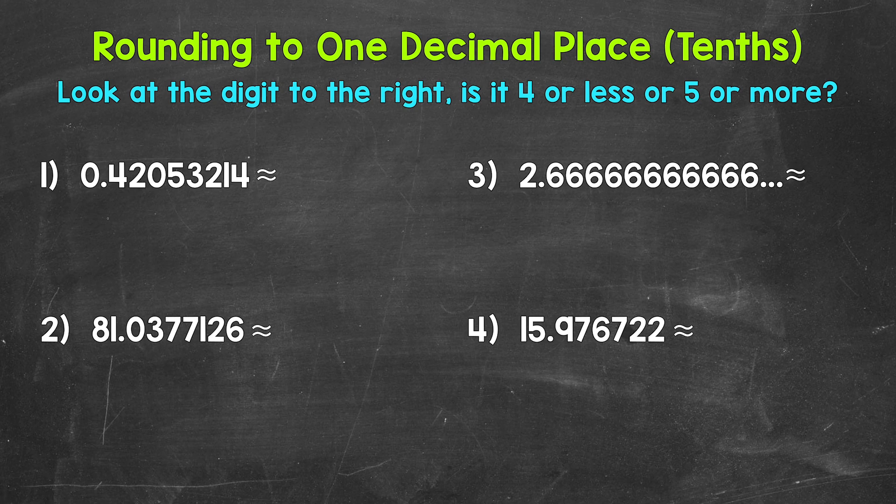I'm going to start by underlining the digit in the tenths place. That's going to be the digit to the right of the decimal, so this four here for number one. We need to take a look at the digit to the right, the digit in the hundredths place. Basically, we are seeing if this decimal is closer to four tenths or five tenths. That number to the right tells us this.